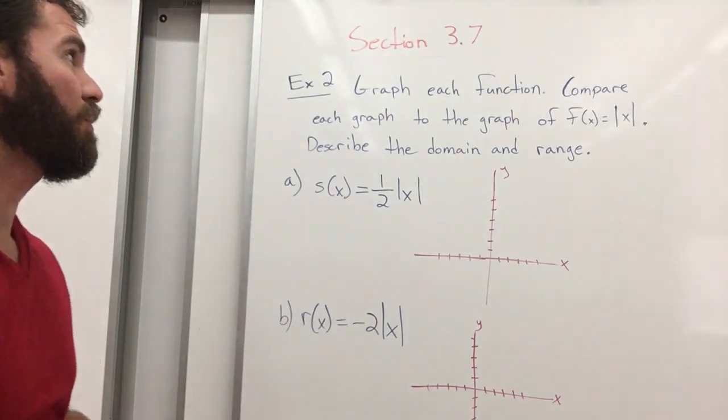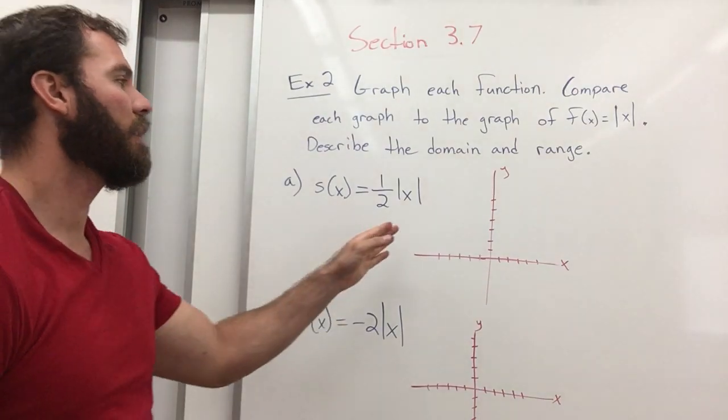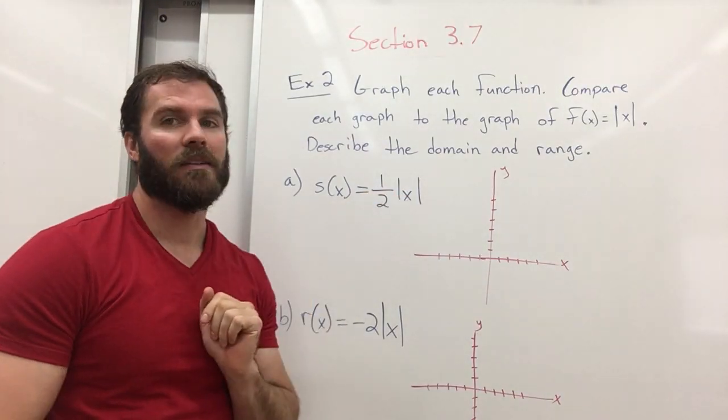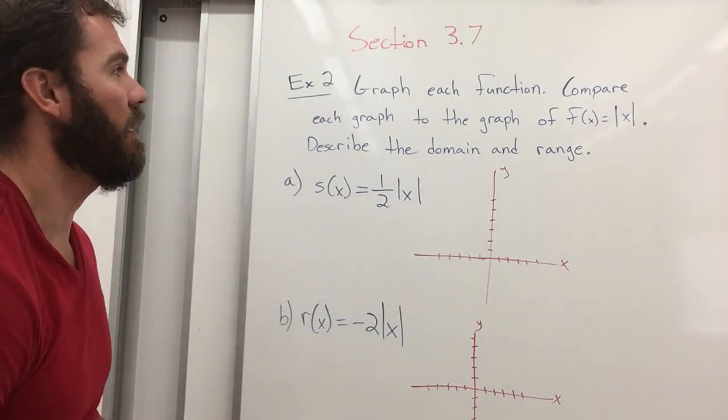In example 2 for section 3.7, similar to example 1, but we're multiplying our absolute value x by a fraction and a whole number. This one's a negative one, so we'll see what happens there.